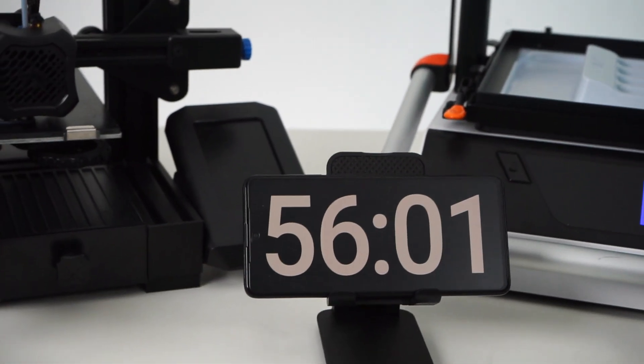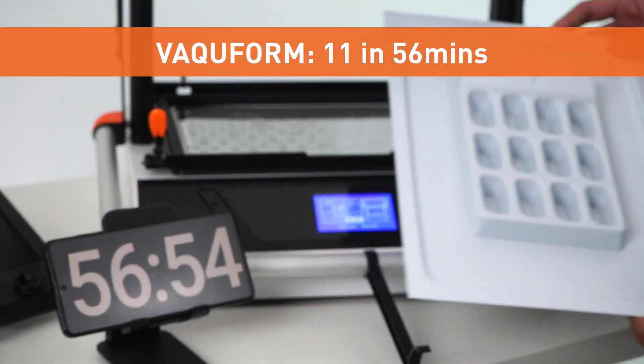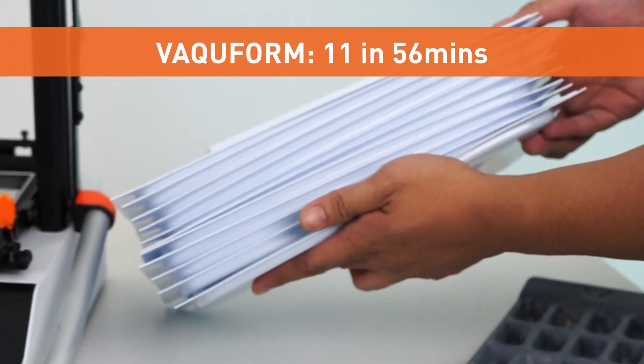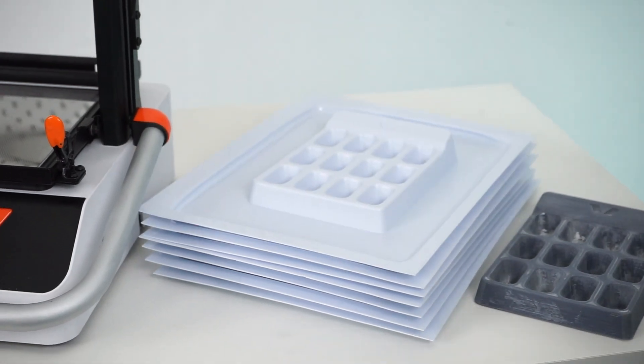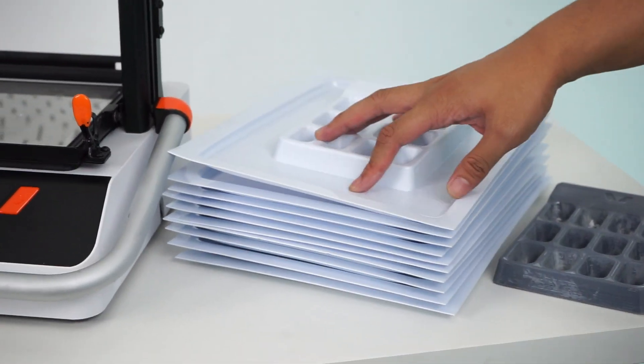At the 56 minute mark, Vacuform was able to make 11 copies of the tool. So we can say Vacuform can average around 11 to 12 pulls in one hour.